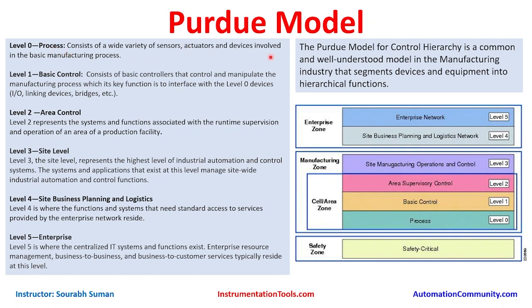Level 0 consists of a wide variety of sensors, actuators, and devices involved in the basic manufacturing process. Sometimes safety-critical instrumentation, or SIS, is also kept in this model, though Cisco has kept it in a completely separate zone. Level 0 is the basic level where all field instrumentation resides, with communications happening over 4–20 mA or proprietary protocols such as Modbus, DNP, IEC, or fieldbus.